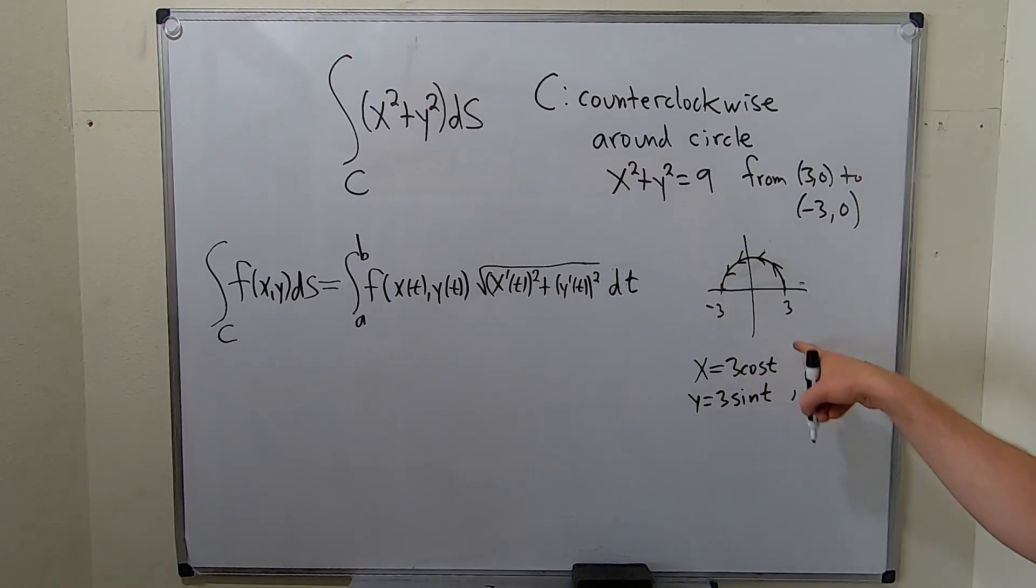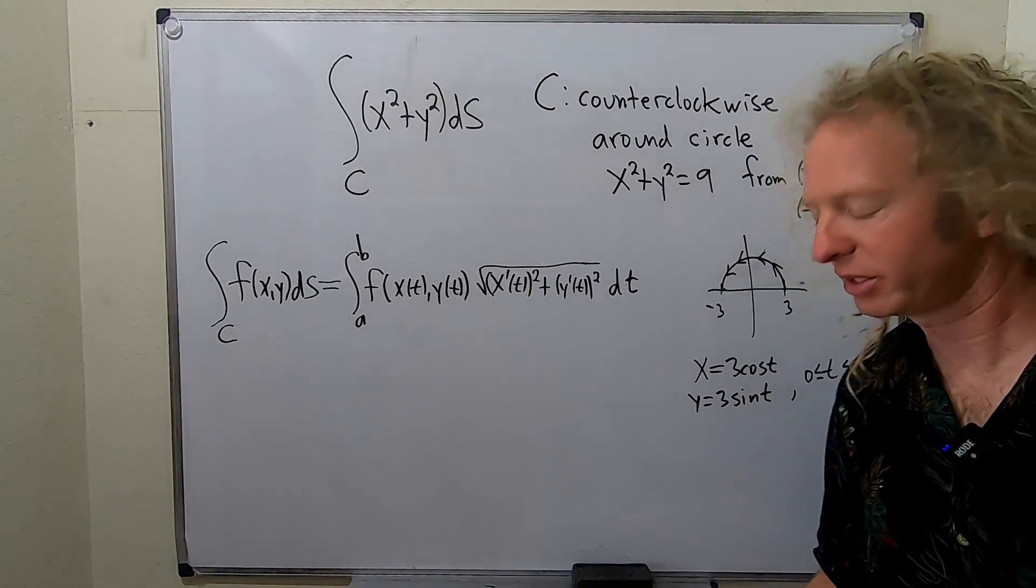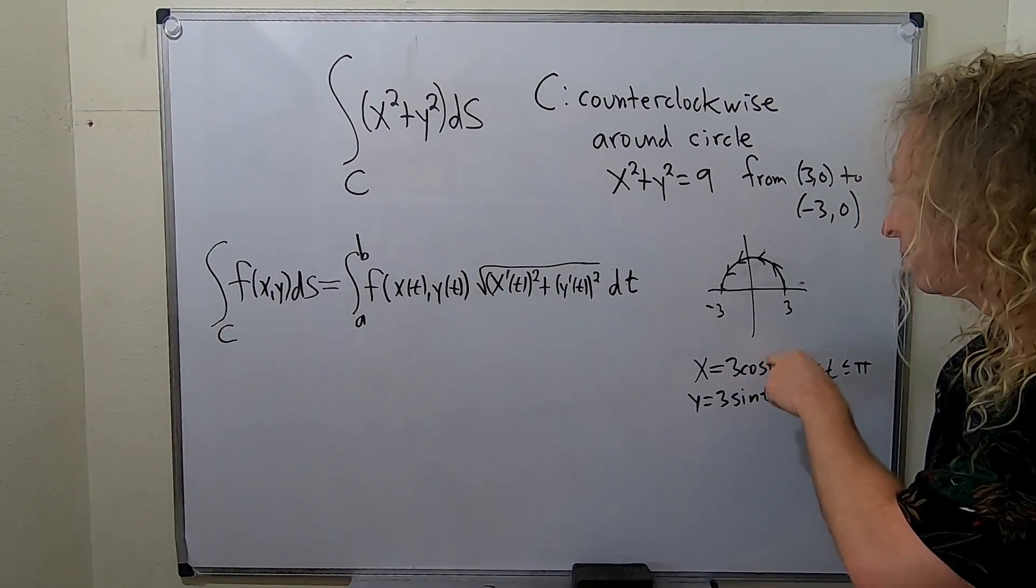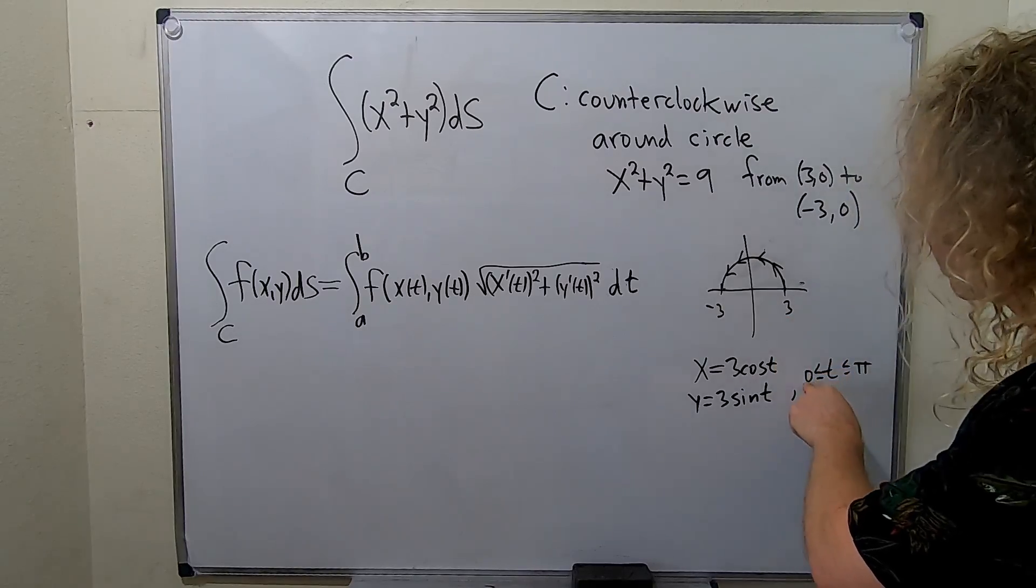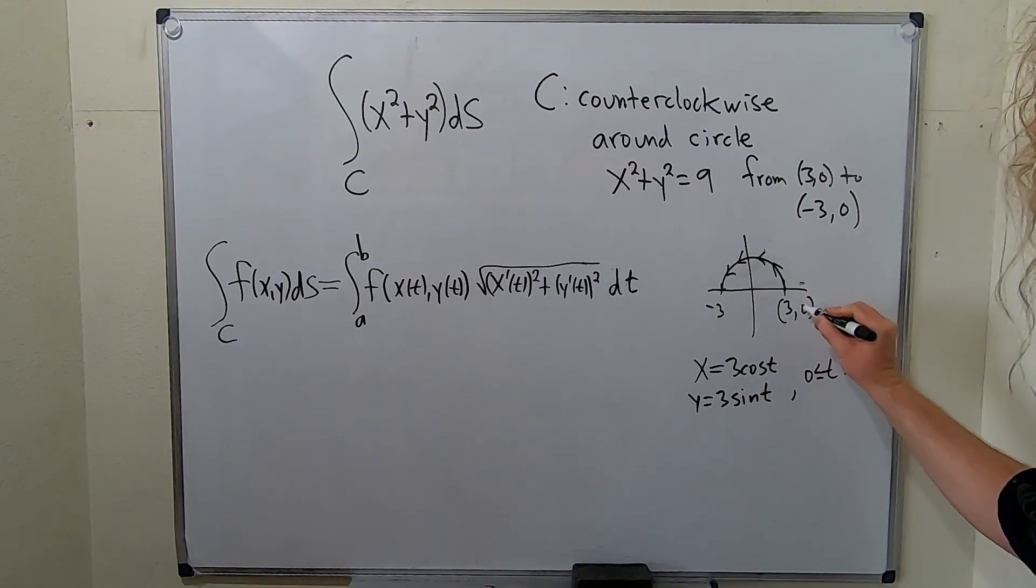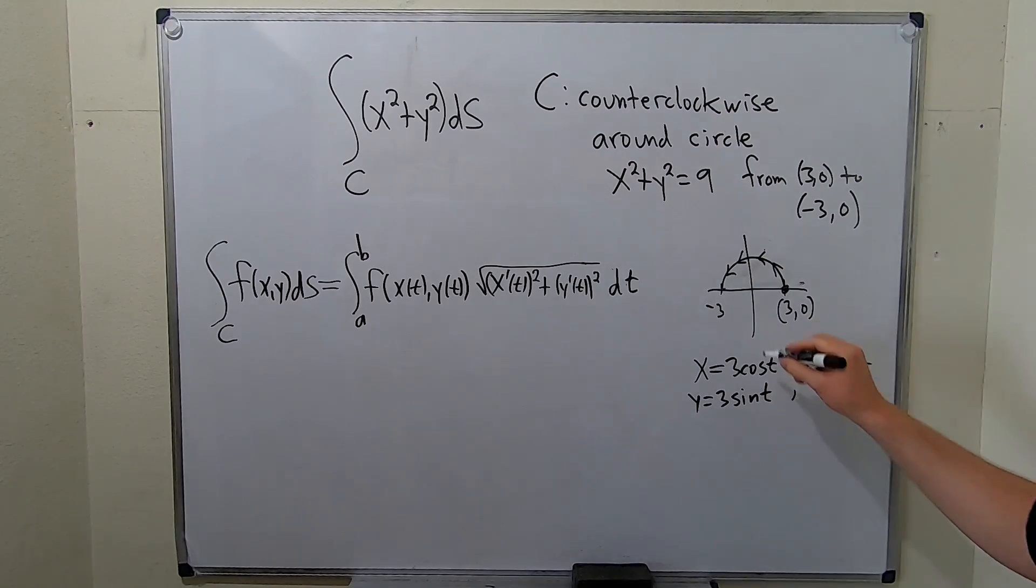And you should always check whenever you create a parametrization like this. If you plug in 0, you get 3 times cosine of 0, so you get 3. If you plug in 0 here, you get 0. So you do get 3, 0 at this point when t equals 0. And at this point, you get negative 3, 0. Let's check.